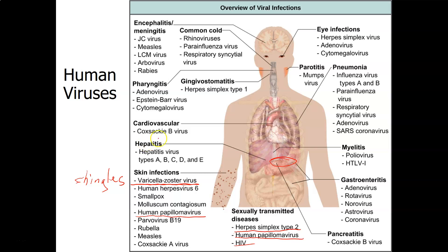Hepatitis is a symptom — it just means inflammation of the liver. But there are five hepatitis viruses that can cause hepatitis. You can also get hepatitis from alcohol, or from medications — taking too much medication or the wrong medication.